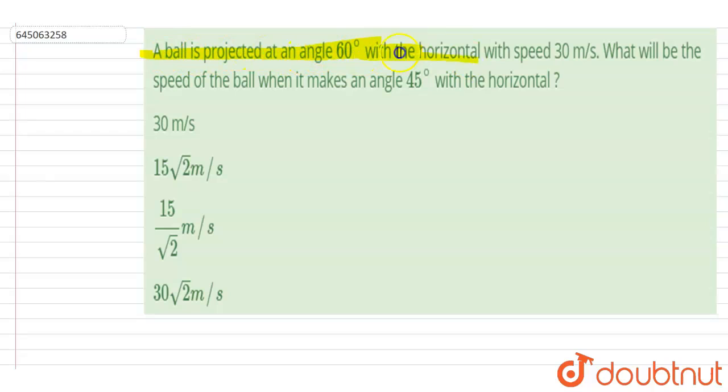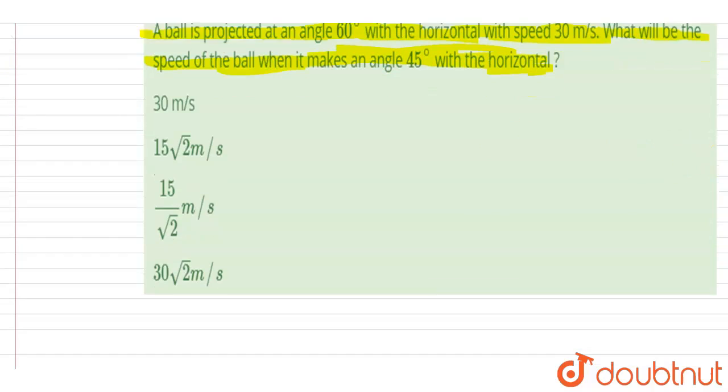Hello everyone. A ball is projected at an angle 60 degrees with the horizontal with a speed 30 meters per second. What will be the speed of the ball when it makes an angle 45 degrees with the horizontal?